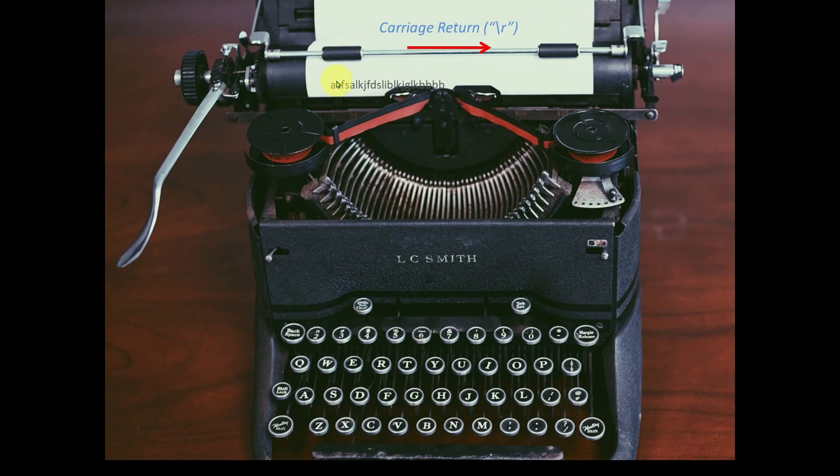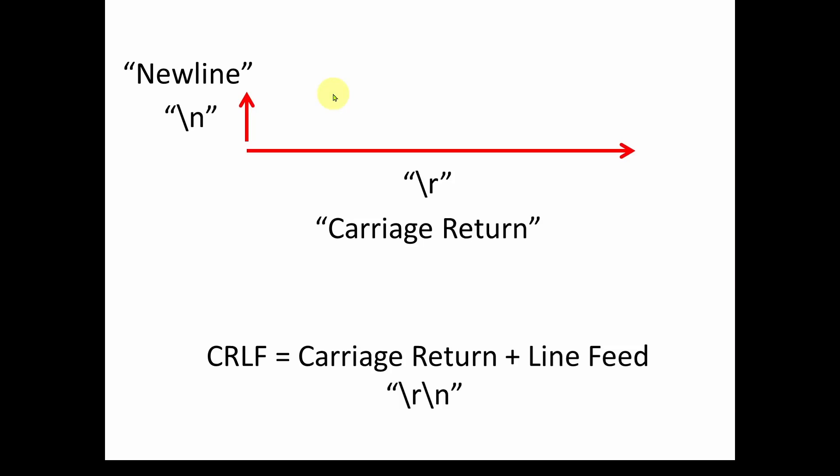The second motion is called a line feed or a new line character, which is a slash N. That is basically rolling this platen by one character height so you can move the head back here. So to get the entire thing to work to move to the next line, you have two characters: you've got a new line which rolls the platen down, and you've got a carriage return which moves the entire carriage to the left.